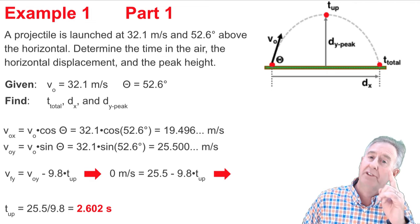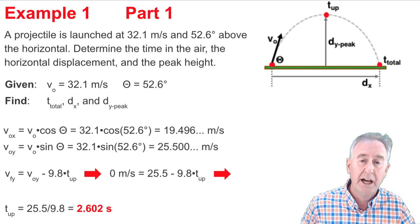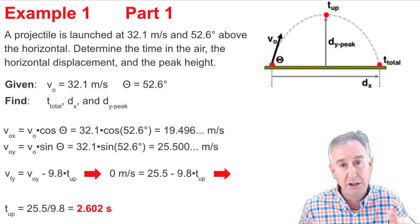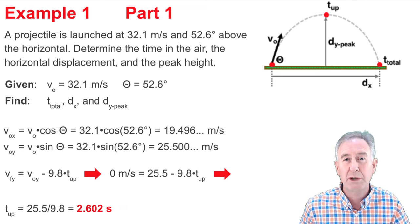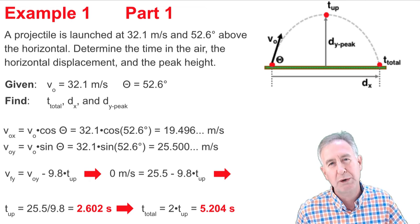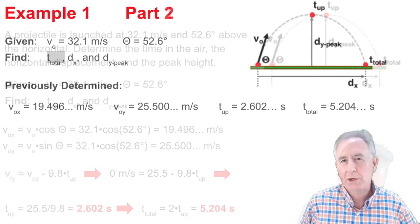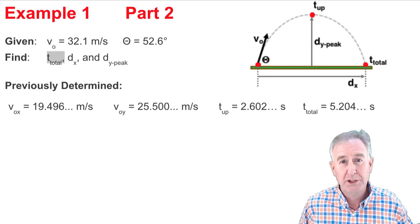Now that's the time to get to that highest point. Now if the projectile rises up and then rises back down, the time up equals the time to come down. So to find the total time, take the 2.602 and double it and you end up getting 5.204 seconds as the time in the air. So I have one of my three unknowns determined, T total.